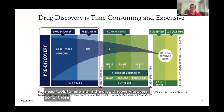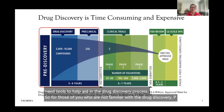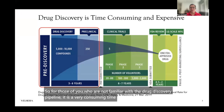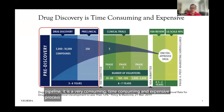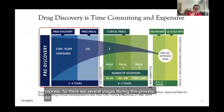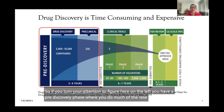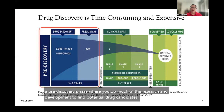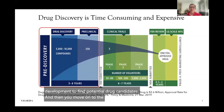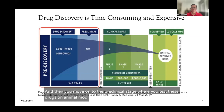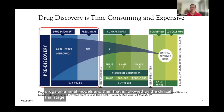For those of you who are not familiar with the drug discovery pipeline, it is a very time-consuming and expensive process. There are several stages during this process. If you turn your attention to the figure here on the left, you have a pre-discovery phase where you do much of the research and development to find potential drug candidates. Then you move on to the pre-clinical stage where you test these drugs on animal models, followed by the clinical trial stage where you test these drugs in humans for their safety and efficacy.